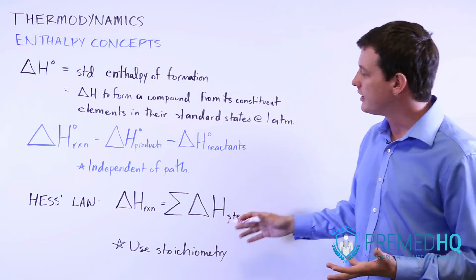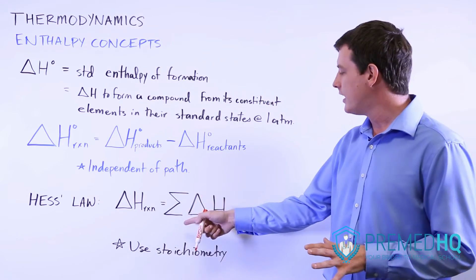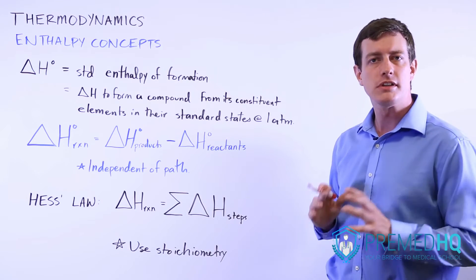The bottom line with Hess's Law is that the change in enthalpy of a reaction can be calculated by just adding up the enthalpy changes of each of the steps.